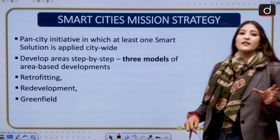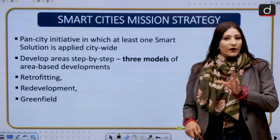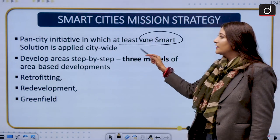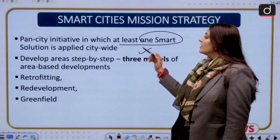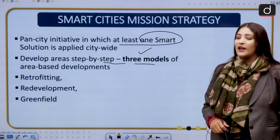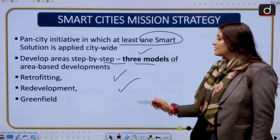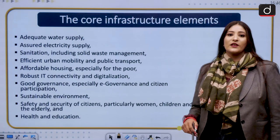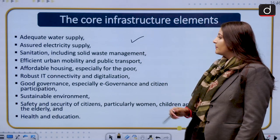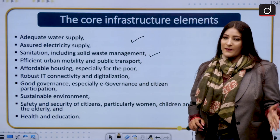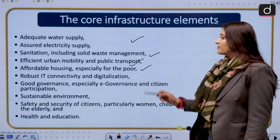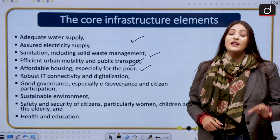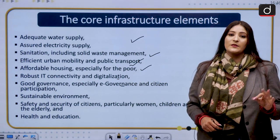The mission focuses on compact areas, creating replicable models that can be implemented pan-India — one area serves as a model and if it works, it is implemented in other regions too. It is a pan-city initiative where at least one smart solution is applied in the entire city. There are three models of area-based development: first, retrofitting; second, redevelopment; and third, greenfield. The core infrastructure areas include adequate water supply, assured electricity supply, sanitation including solid waste management, efficient urban mobility and public transport, affordable housing, and robust IT connectivity and digitization.